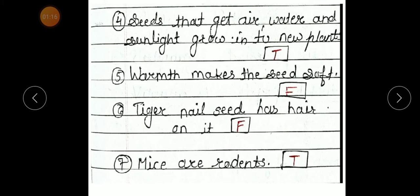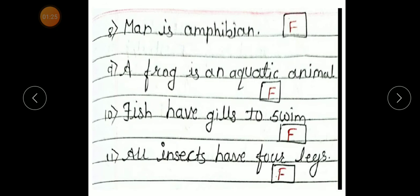Number 7. Mice are rodents. True or false? True. Number 8. Man is amphibians. True or false? F, false.